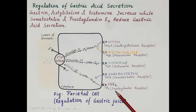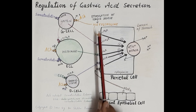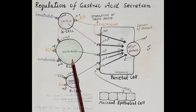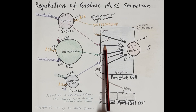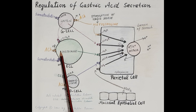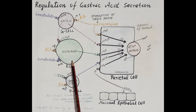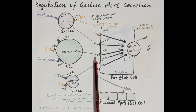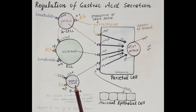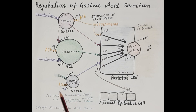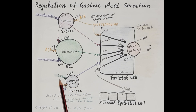Thus, gastrin, acetylcholine, and histamine increase the secretion of hydrochloric acid by the parietal cells, while somatostatin and prostaglandin E2 reduce it. Of the three secretagogues, histamine plays the dominant role. Gastrin and acetylcholine act directly on the parietal cells, but they also act indirectly by stimulating the release of histamine from enterochromaffin-like cells, which then stimulates the parietal cells to release hydrochloric acid.